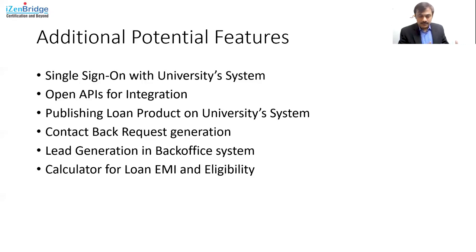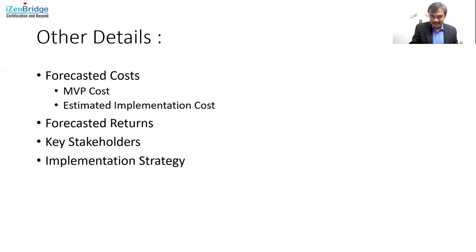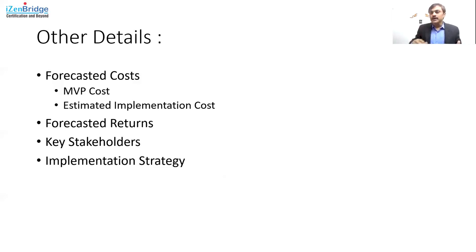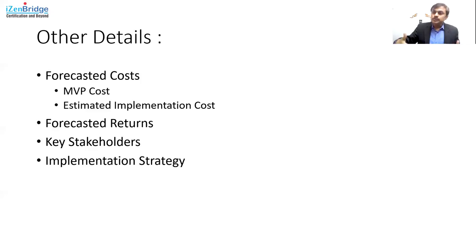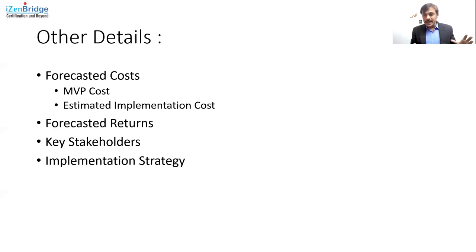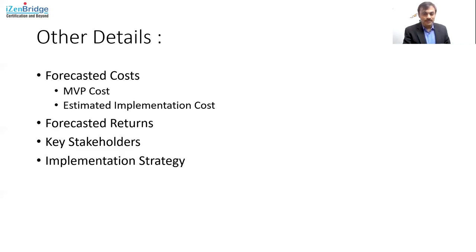All of this comes as part of the lean business case — I identify my MVP and talk about additional potential features. There is also a possibility that the lean business case talks about MVP cost estimation, overall implementation cost for this EPIC, and quantified forecast for returns. When I say I will increase the percentage of market share in the loan segment, I need to show how that converts into monetary returns. We may also need to talk about the key stakeholders who will work on this EPIC and can provide validated information as we go along. I'm not elaborating these with full examples here as it would be too much, but you might need to do it when working on a lean business case of an EPIC.